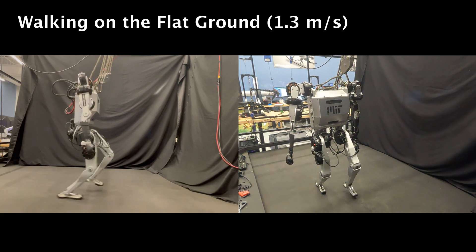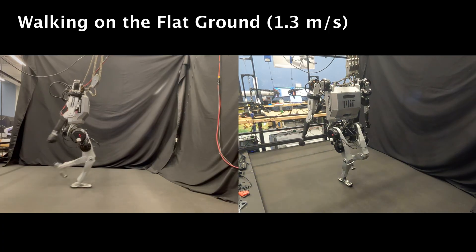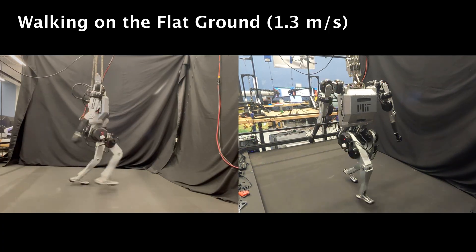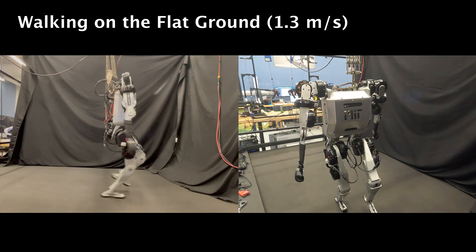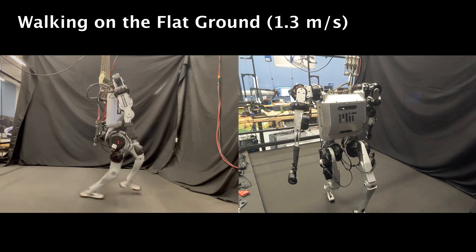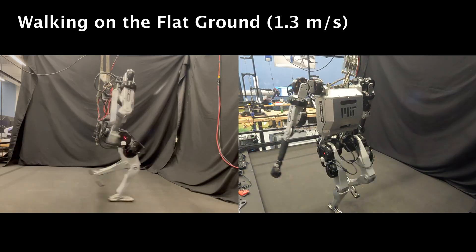Here, we demonstrate zero-shot sim-to-real transfer of our limb-level multi-agent policy on hardware. Note the natural arm swing emerging from our CAM-based reward shaping. The robot achieves speeds up to 1.3 meters per second.